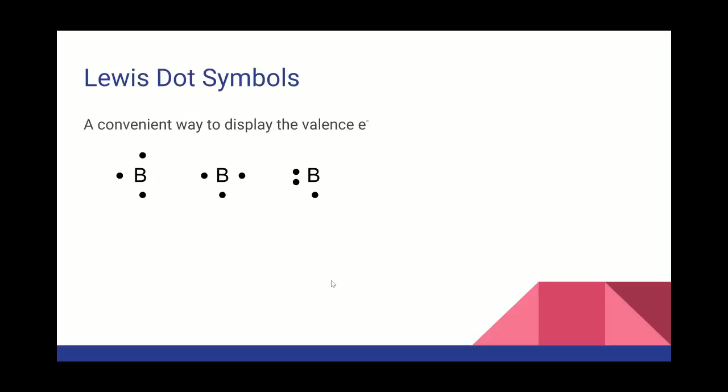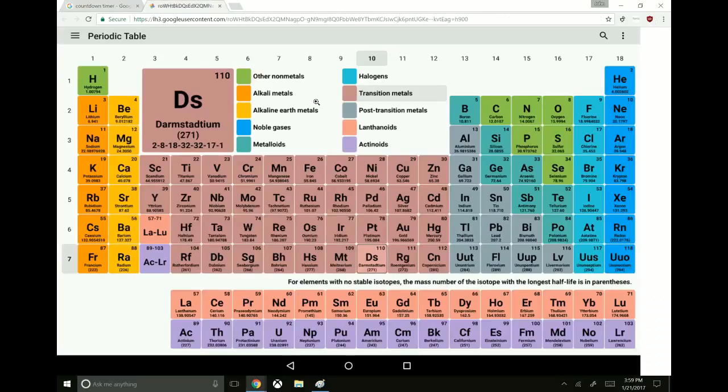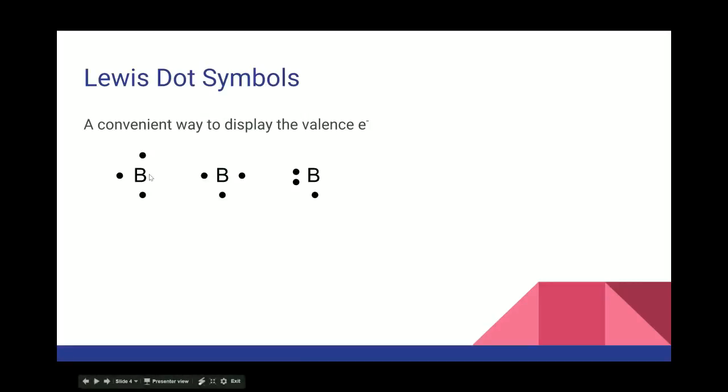Now, another bit of formalism to discuss, before we actually start talking about the various kinds of bonding, is Lewis dot symbols. This is just a way to display the valence electrons of an element, so that you can talk about the bonds that are formed and how the bonds are formed. This here is boron. Boron is element number five over here. Boron has one, two, three valence electrons. And you just represent those by drawing the symbol boron, which is B, and then one, two, three dots.